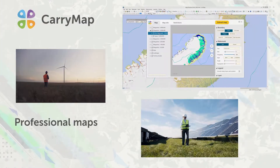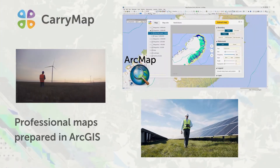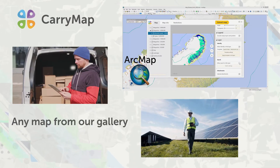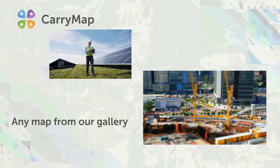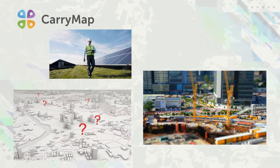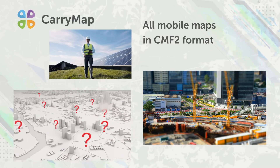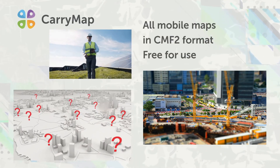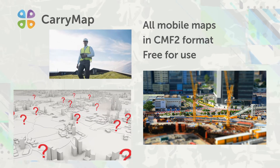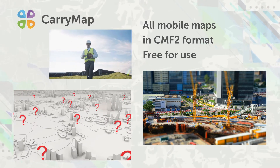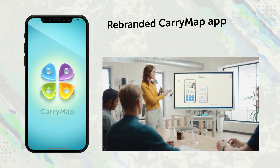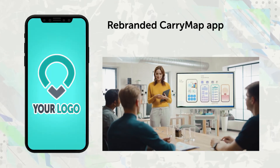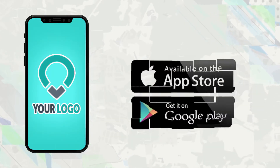Use your own professional maps prepared in ArcGIS, or download any map covering the needed territory from our gallery. All mobile maps in our gallery are in the protected CMF2 format and can be downloaded and used for free. The Carry Map app can be rebranded and published under your company name on the App Store and Google Play.